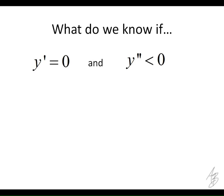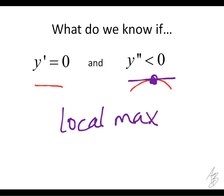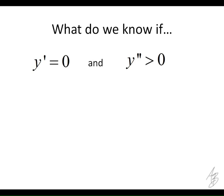We also know from the second derivative test that if the first derivative equals zero we have a horizontal tangent, and if the second derivative is negative we know it's concave down — so at that point we're going to have a local maximum. Likewise, if the first derivative is zero and the second derivative is positive we know it's concave up, so we're going to get a local minimum.